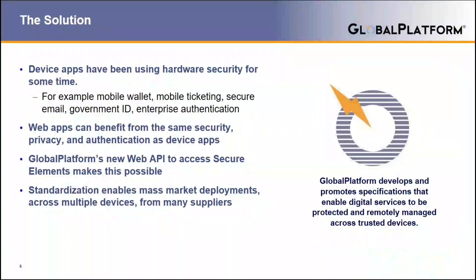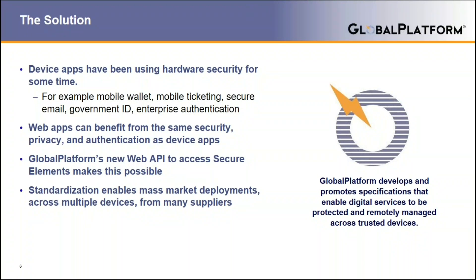For a solution, we can look to device apps, which have been using hardware to deliver privacy, security, and authentication for many years, for applications such as mobile wallet, secure email, and enterprise authentication. But until recently, web apps did not have access to the same hardware and the services that it offers. This is why Global Platform has been working to develop and launch its web API to access secure hardware, and in this case, the secure element. Developers can now leverage hardware on the device to secure their web apps in a standardized way, opening the potential to reach the mass market by developing once and reaching a range of device types offered by different suppliers.